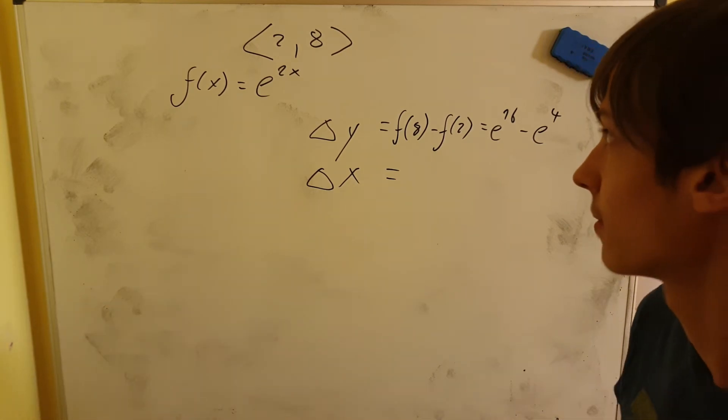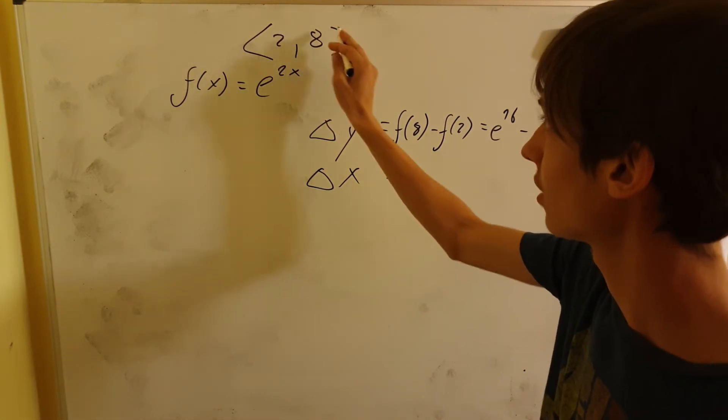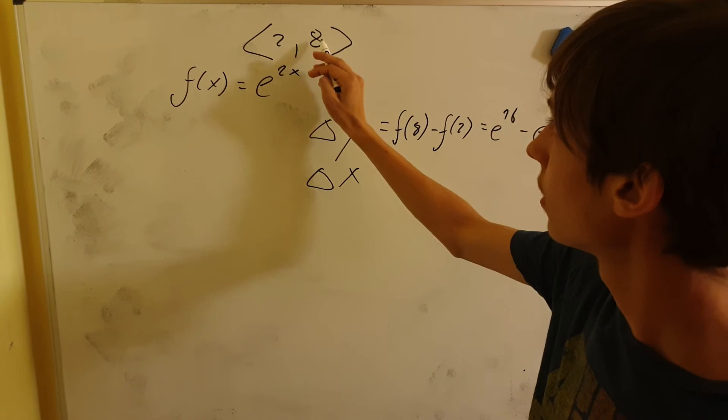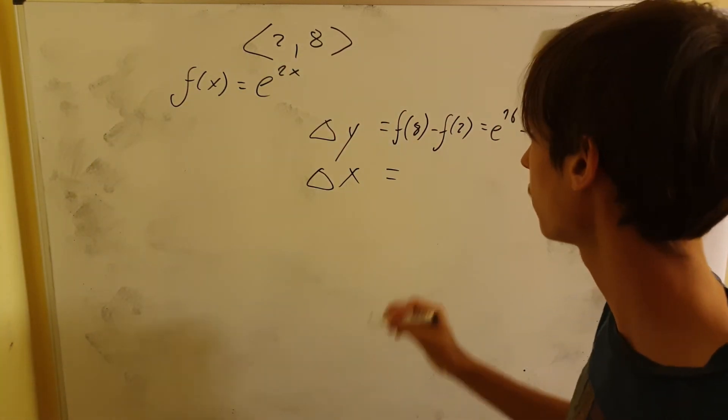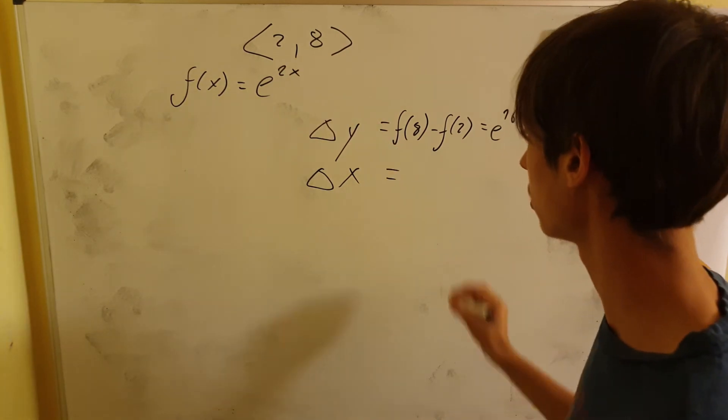Now delta x is going to be eight minus two. It's just the difference of the top point of the interval minus the bottom point of the interval - so the end minus the beginning of the interval. Eight minus two, which is six.